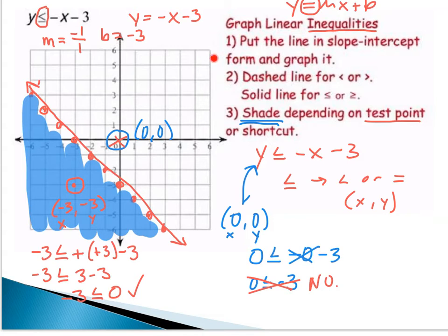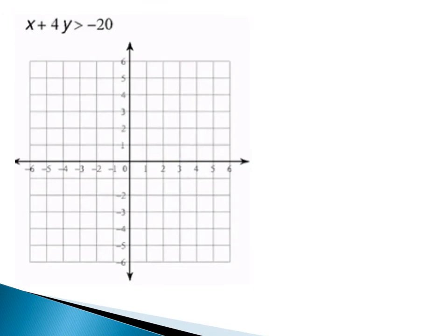Make sure you jot down these steps — and I'll show you a shortcut in a little bit, including the idea of a dashed line versus a solid line. Next example: x plus 4y is greater than negative 20. First, make sure it's in slope-intercept form y equals mx plus b. It's not, so I need to rewrite it. Subtract x from both sides: 4y is greater than negative 20 minus x.